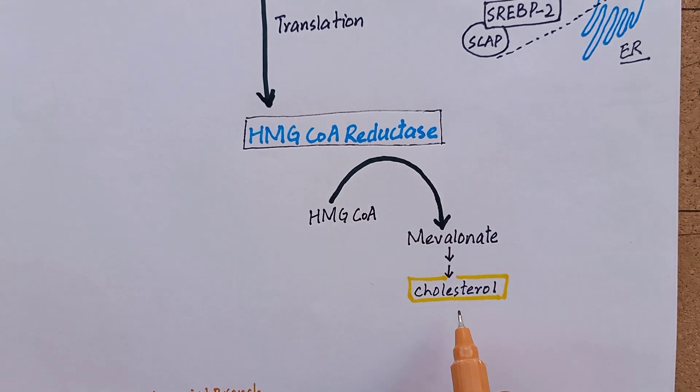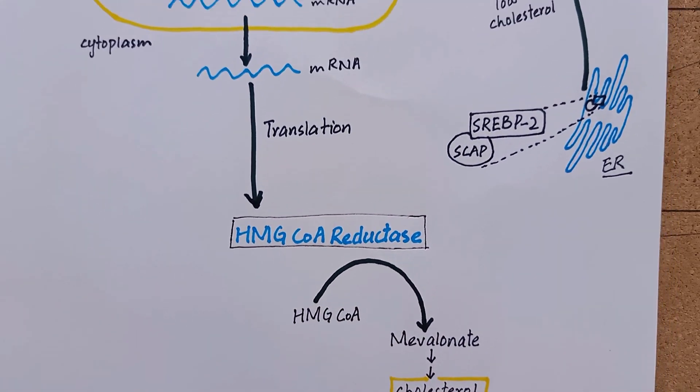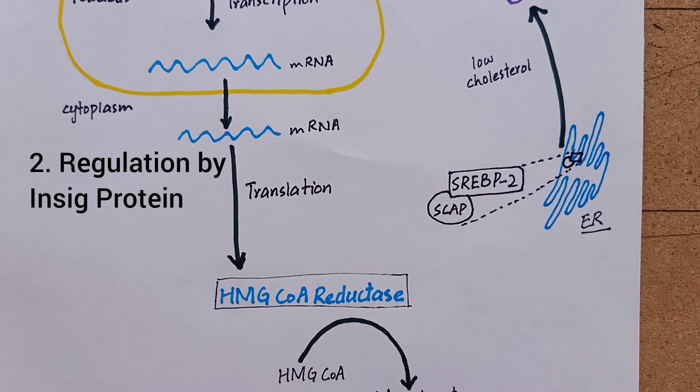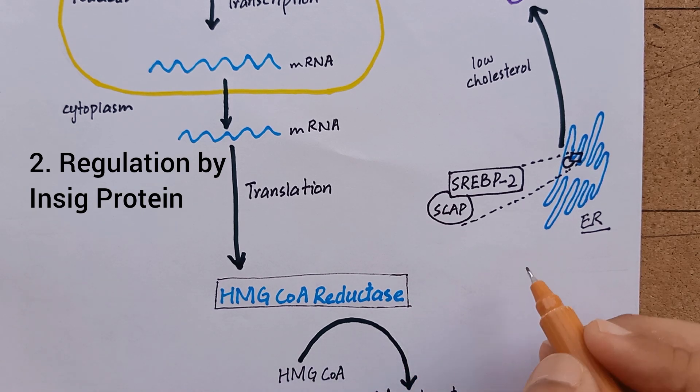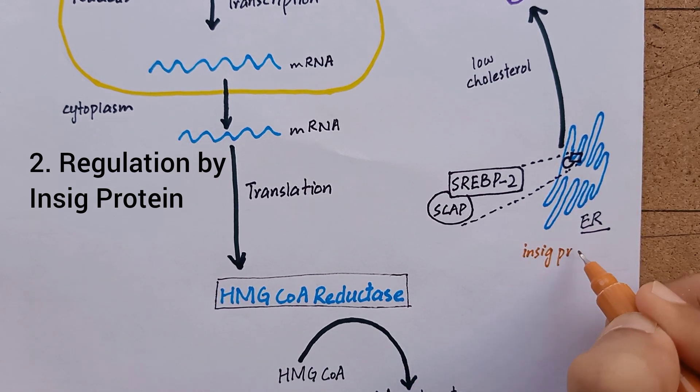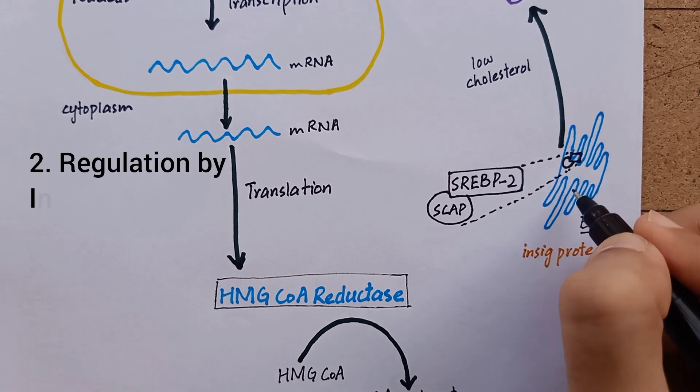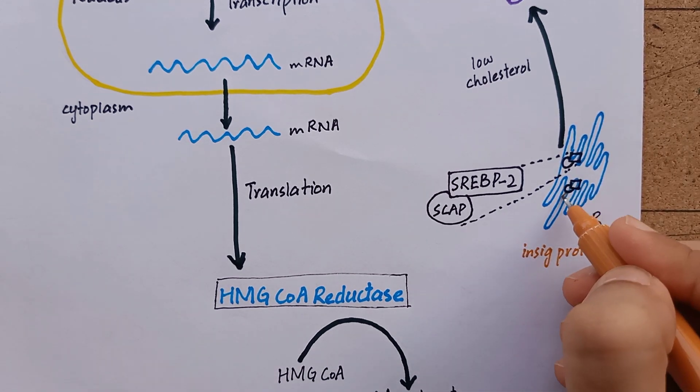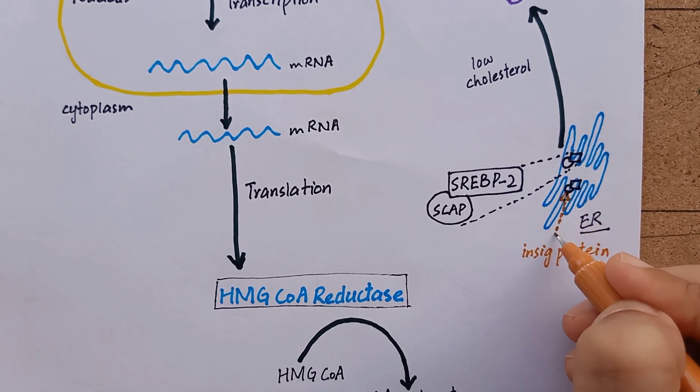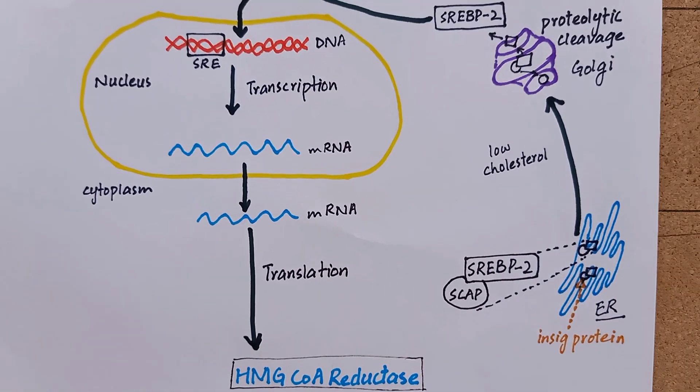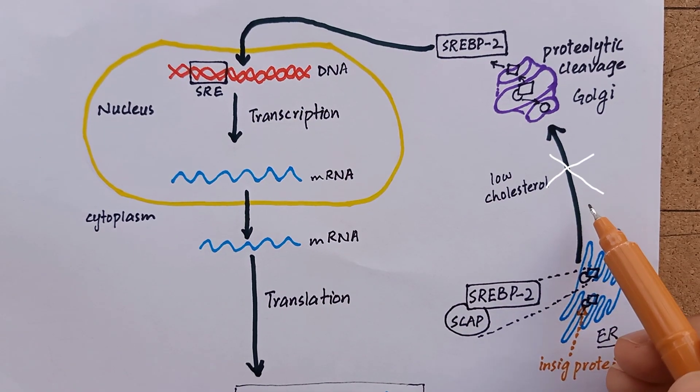On the other hand, if cholesterol is abundant in the cell, the sterol sensing domain of SCAP protein induces its binding to another protein of endoplasmic reticulum called INSIG protein. The INSIG protein retains this SREBP2-SCAP complex in endoplasmic reticulum and prevents its delivery to the Golgi,